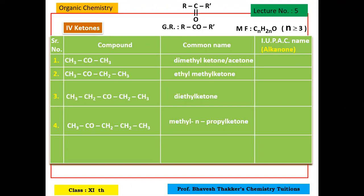Every time we name ketones, we consider alphabetical order. Here, E and M — so we write ethyl first, then methyl. Here, methyl and propyl — M first, then P. But N, sec, tert are not considered in alphabetical order. If it is iso or neo, then we do consider them. Now try the fifth one — check the alkyl group on both sides, then write alphabetically.